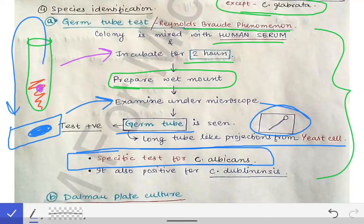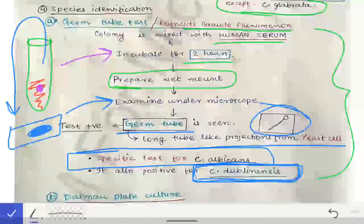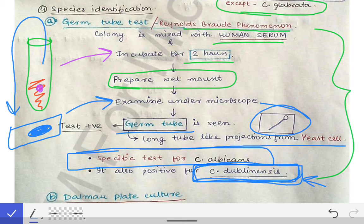Candida dublinensis can also give a positive germ tube test, which is an important MCQ point. However, if asked which is the most probable organism when the germ tube test is positive, the answer is Candida albicans.